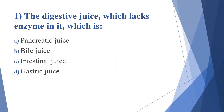First question: the digestive juice which lacks enzyme in it. Option A: pancreatic juice. Option B: bile juice. Option C: intestinal juice. Option D: gastric juice. Answer is option B, bile juice.